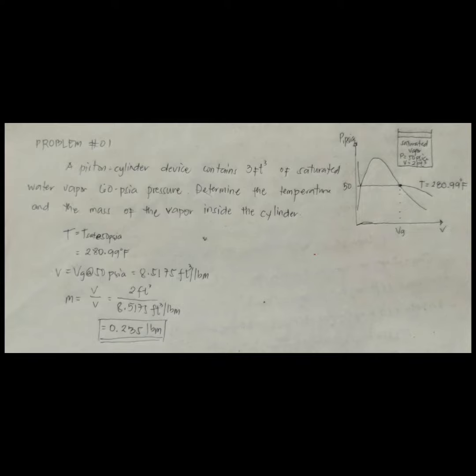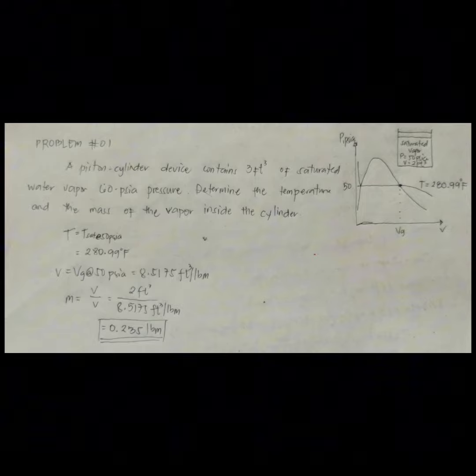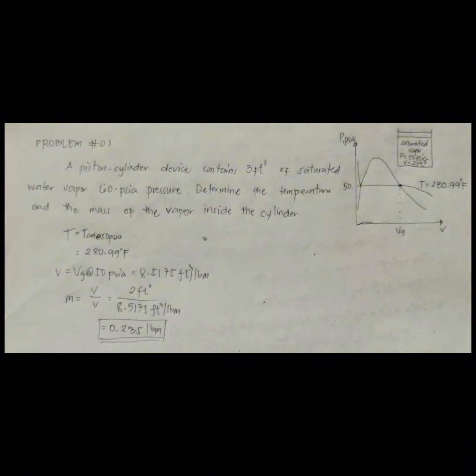Since the cylinder contains saturated vapor at 50 psi, the temperature inside must be the saturation temperature at this pressure. So temperature is equal to the saturated temperature at 50 psi, which is equal to 280.99 degrees Fahrenheit.